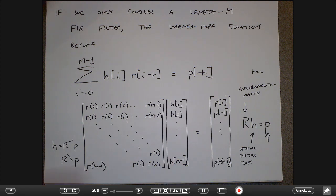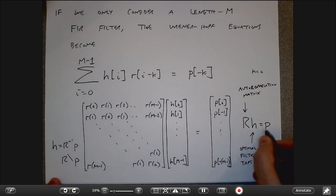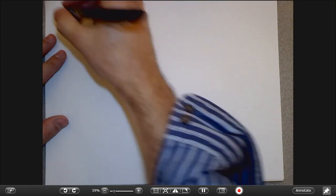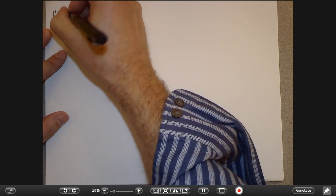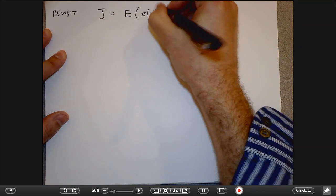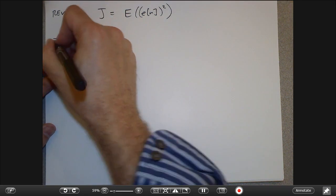Let's think about how well we can do with this approach. Suppose I've solved this and obtained my optimal coefficients. Let me revisit J — the expected value of my error squared. Writing out the expected value of the desired thing minus the filtered signal, squared, I get terms involving the variance of the desired process, the cross-correlations p, and the autocorrelation matrix R.